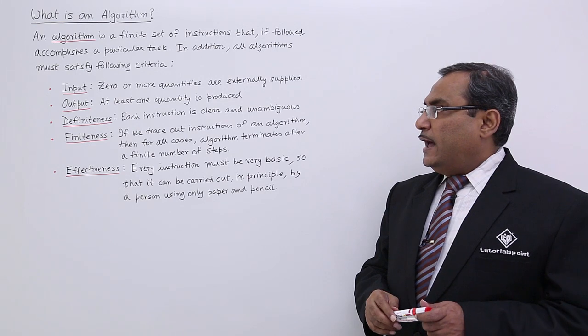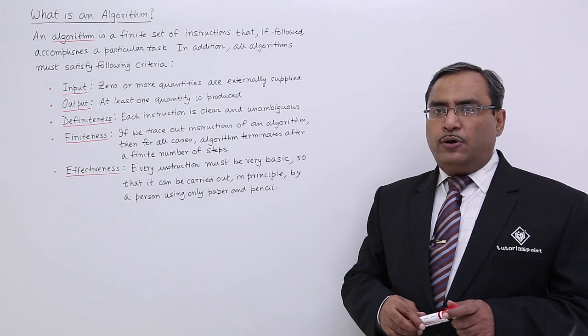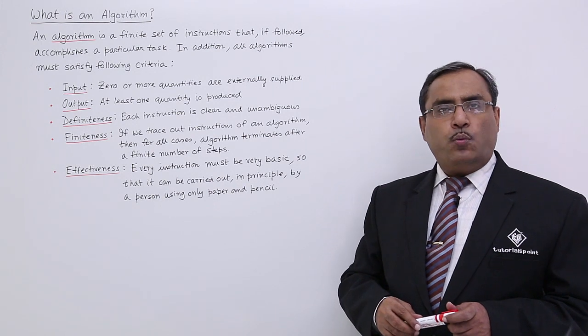Output: At least one quantity is produced. That means an algorithm must produce at least one output.